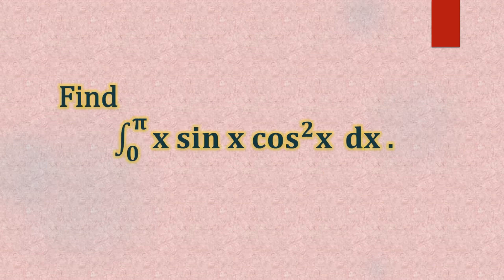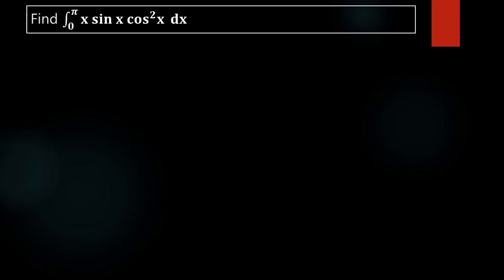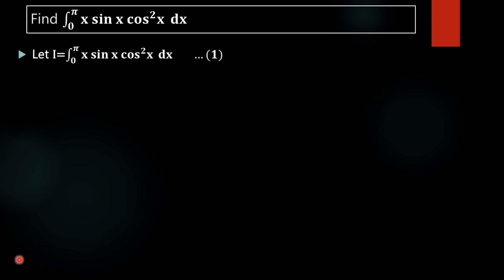We are going to evaluate the definite integral from 0 to π of x·sin(x)·cos²(x) dx. Since the integral has limits of integration — upper limit π and lower limit 0 — we call it a definite integral. We will name this integral as I. So, I = ∫₀^π x·sin(x)·cos²(x) dx.